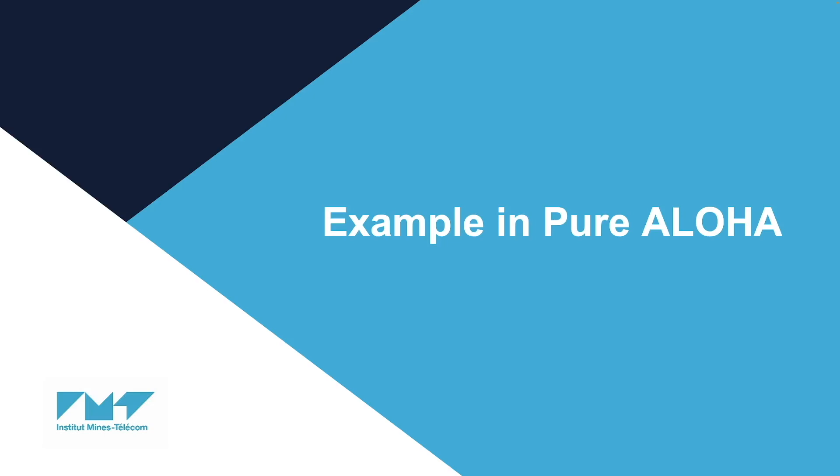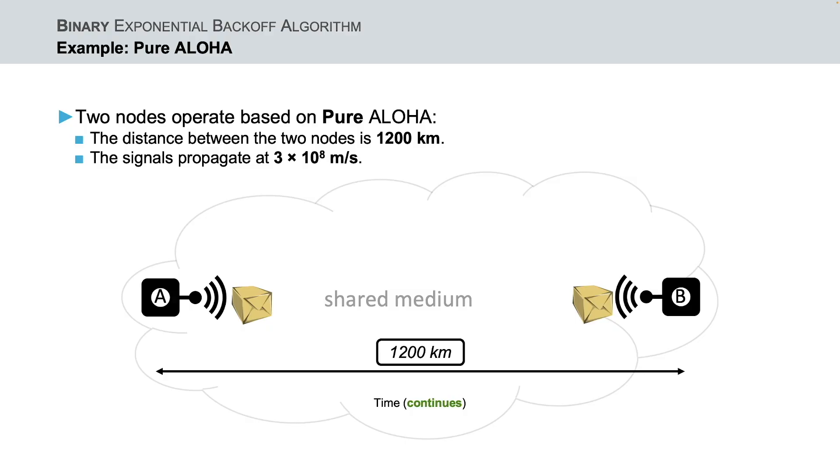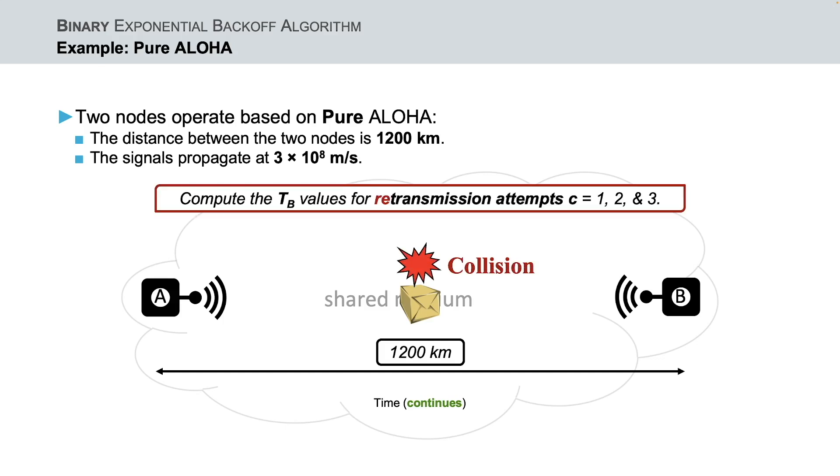I will proceed now with an example of binary exponential backoff algorithm when employed in a wireless network that is based on pure ALOHA. Let us assume two nodes A and B in a wireless network that run pure ALOHA, where the transmission time is continuous, are at maximum of 1,200 km apart, and the signals propagate at the speed of light in air. Now, based on the scenario, let's compute the waiting backoff time t_b values for retransmission attempts c equal to 1, 2, and 3.